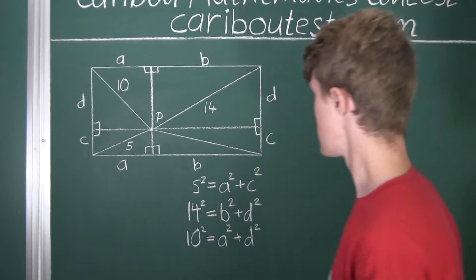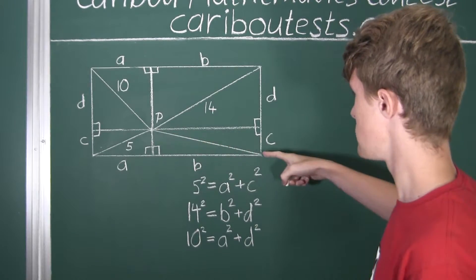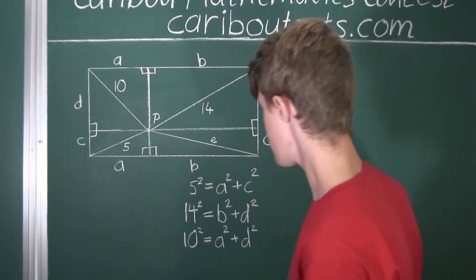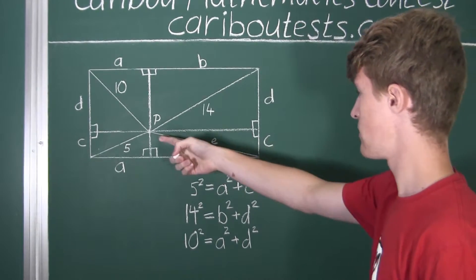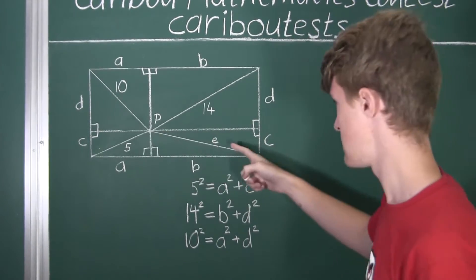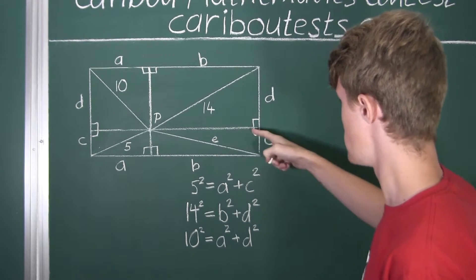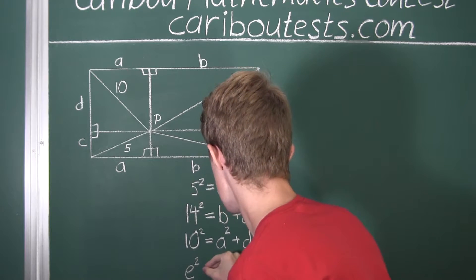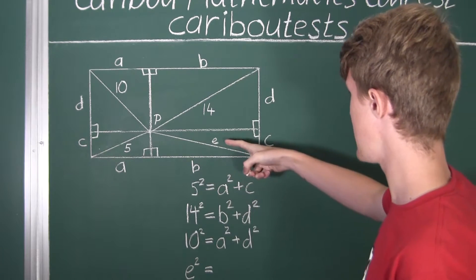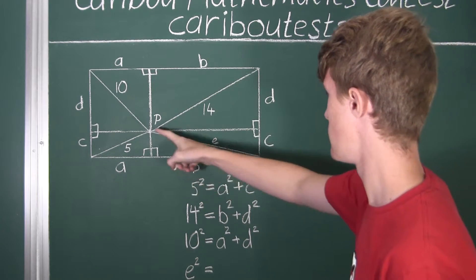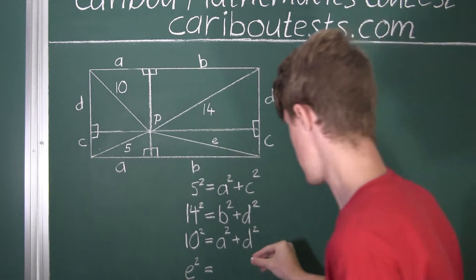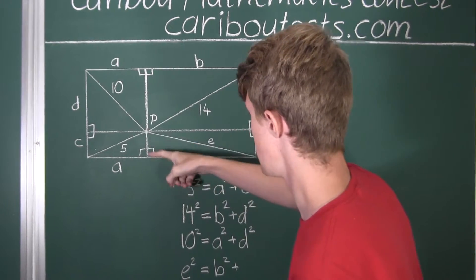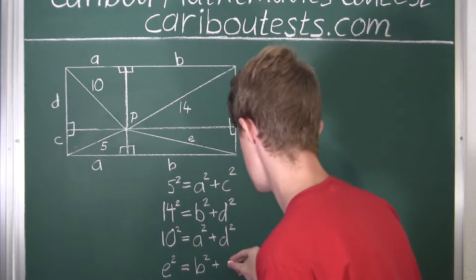We will call the length we want to find E. We know E is the hypotenuse as it is the opposite line to the right angle. So E squared equals, for this triangle, B squared plus this length squared, which we know is C, so plus C squared.